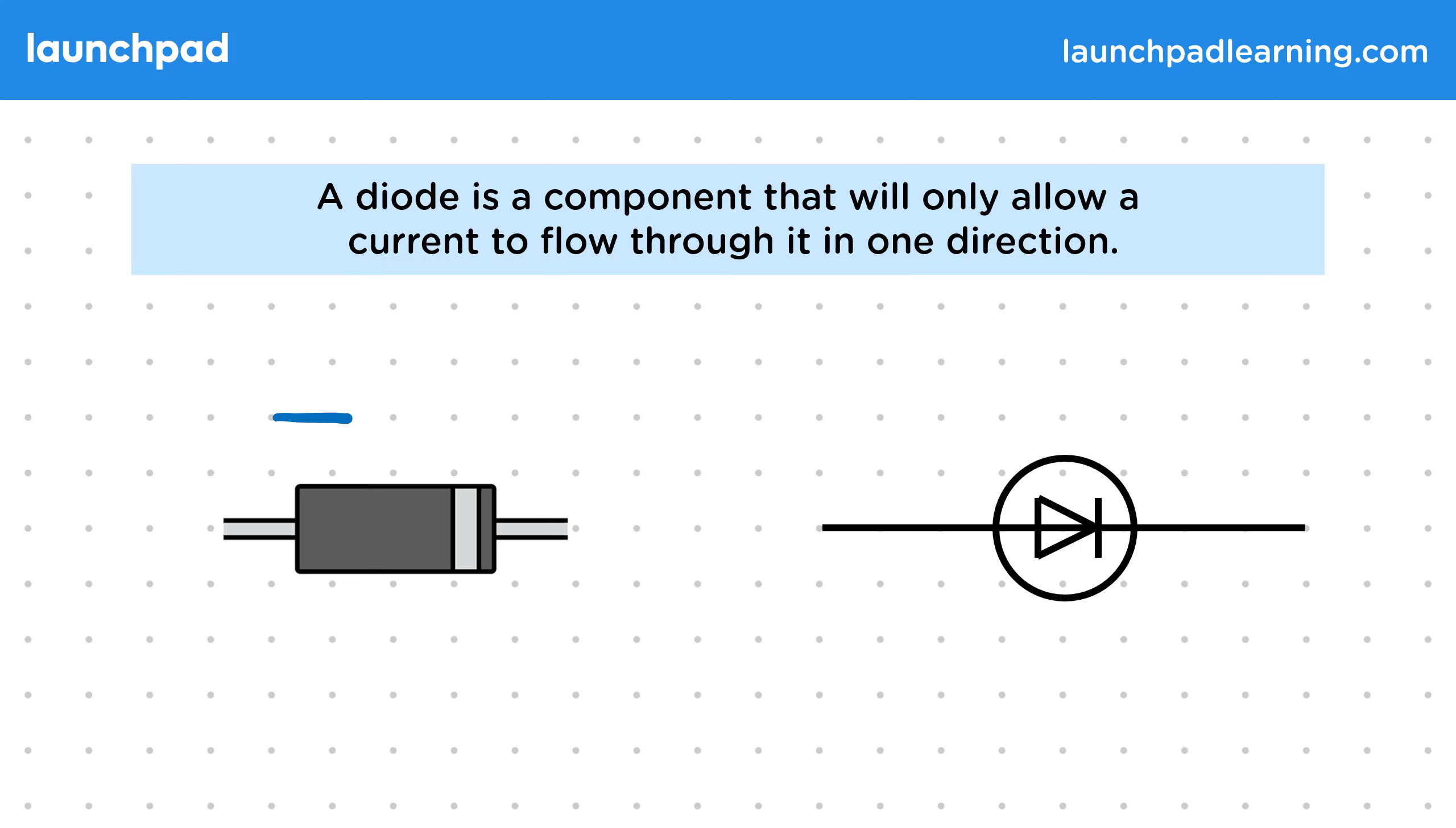When we have a current in this direction, then it can flow normally. The diode has no effect on it, and we can refer to this direction as the positive bias of the diode.